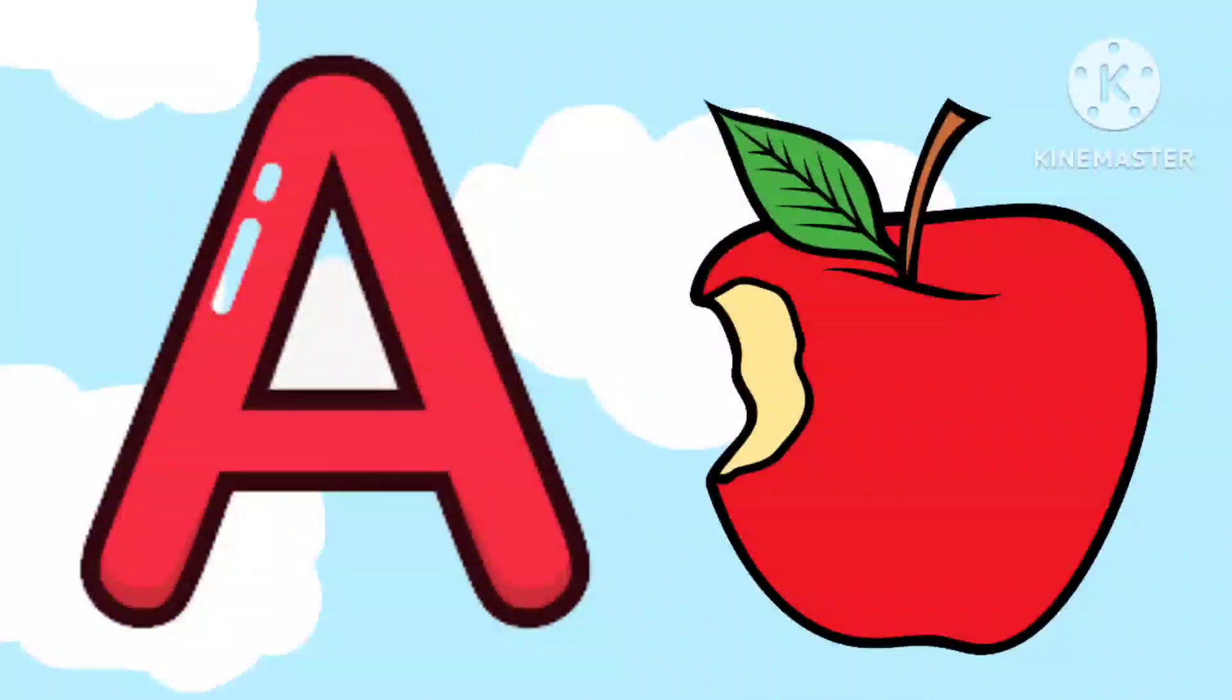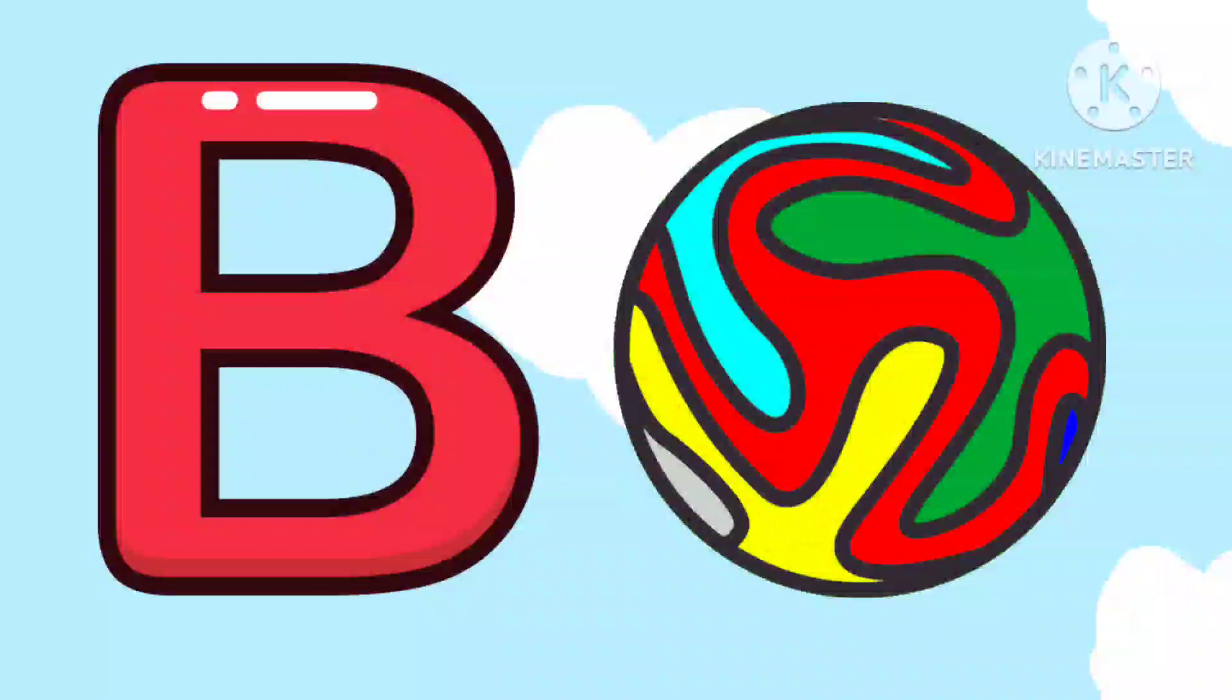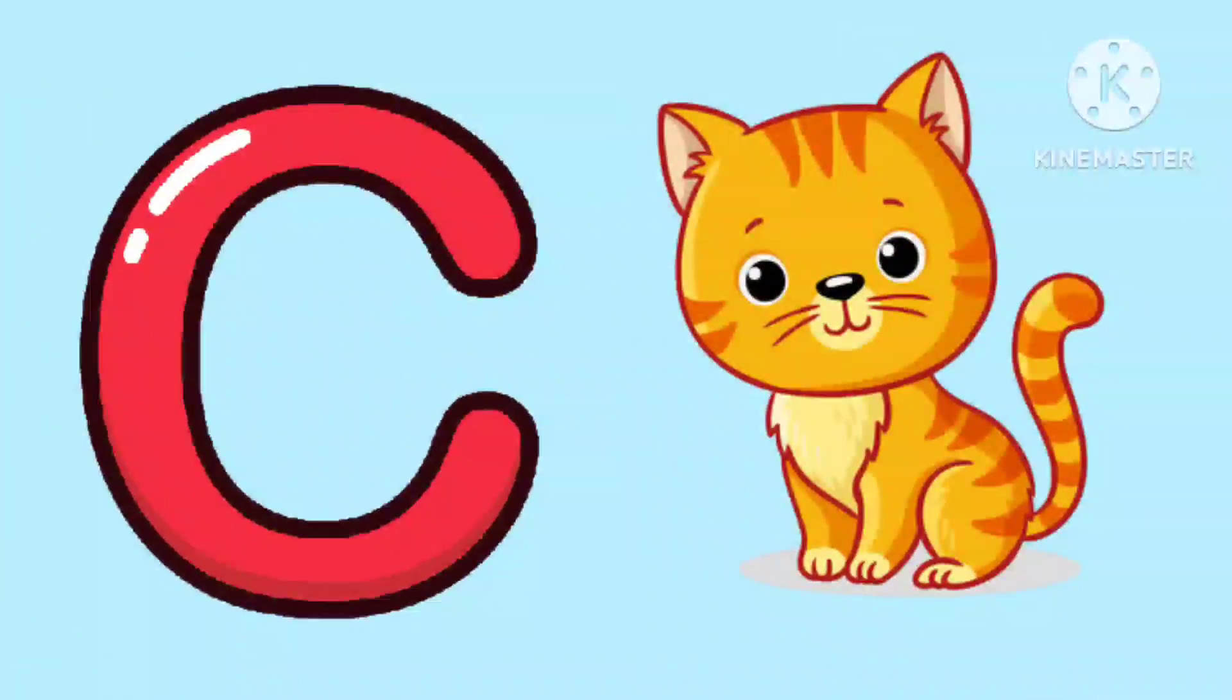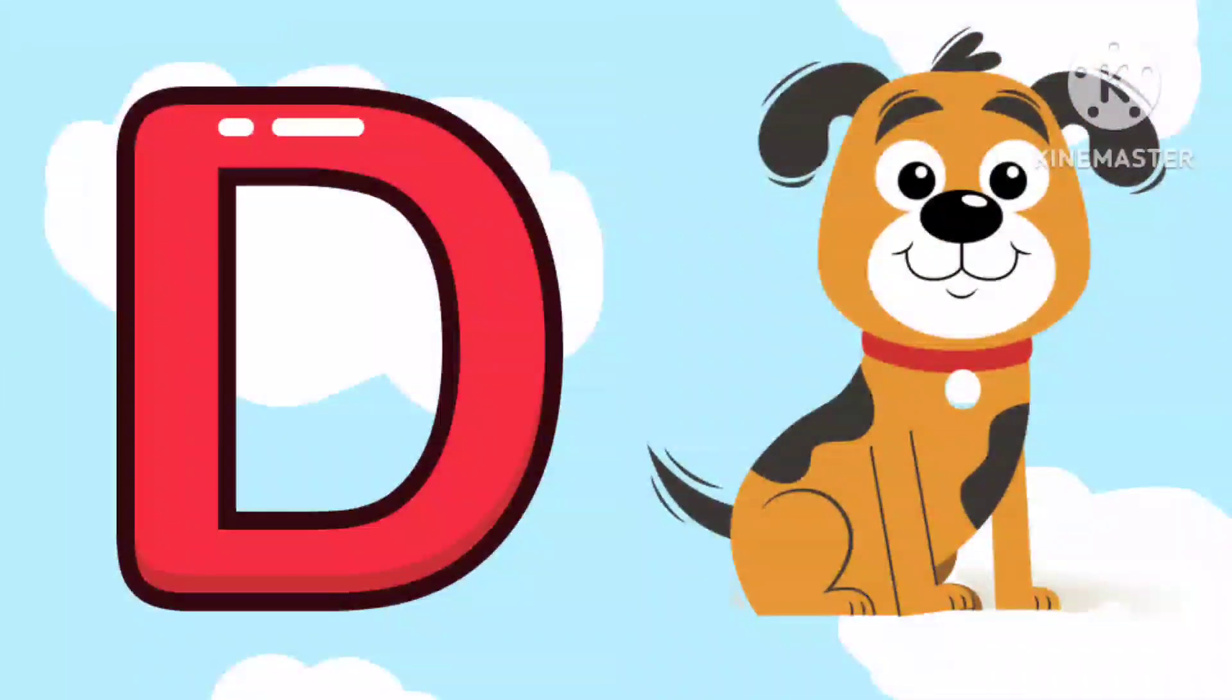A is for Apple, A, A, Apple. B is for Ball, B, B, Ball. C is for Cat, C, C, Cat. D is for Doll, D, D, Doll.